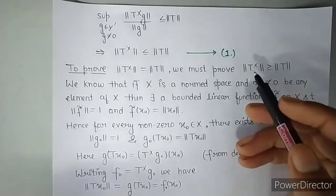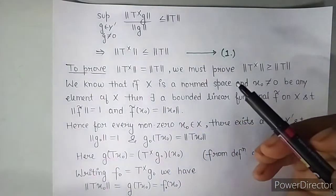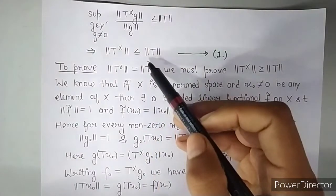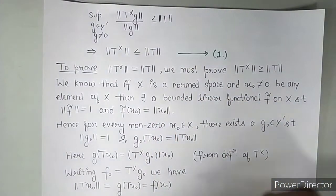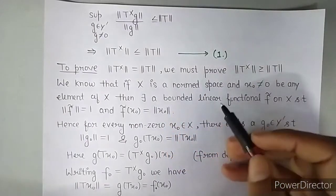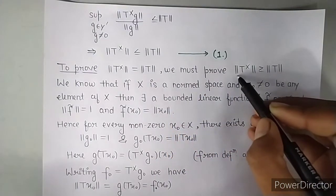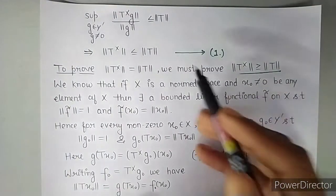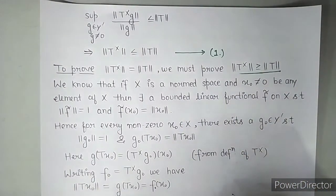So we also have to prove that the two norms are same. So to prove that these two norms are same, we are left to prove that norm of T star is greater than or equal to norm of T. If we prove that by combining with inequality 1, we will get that these two norms are same.